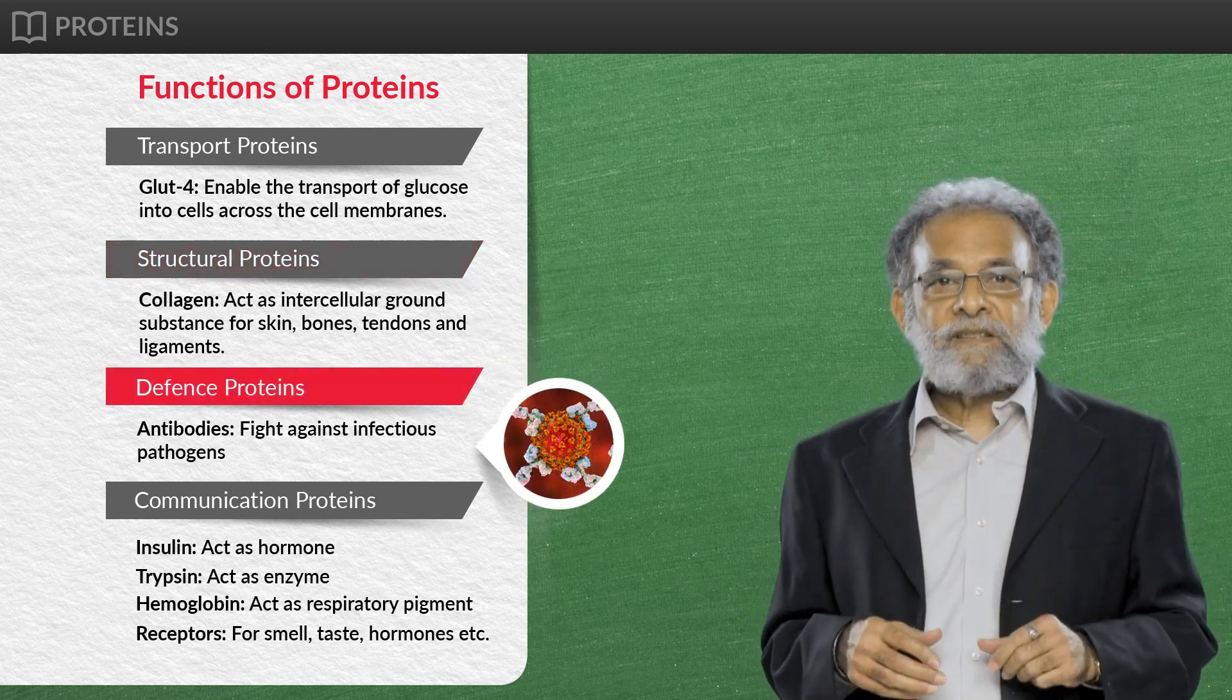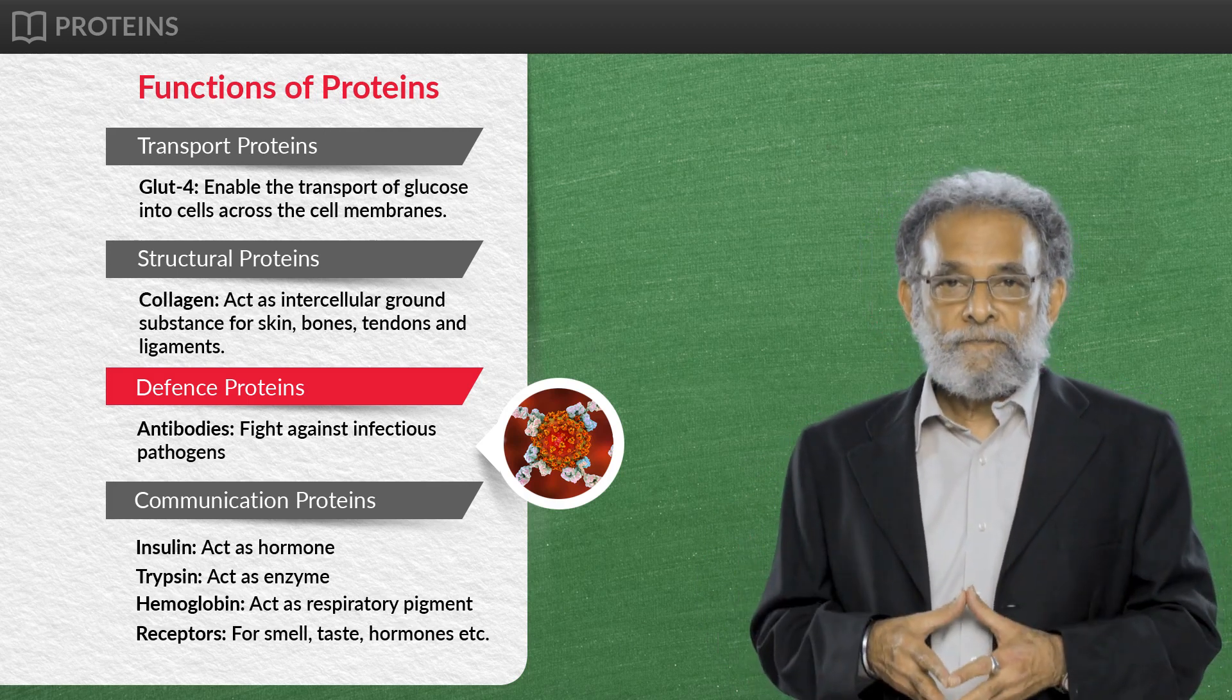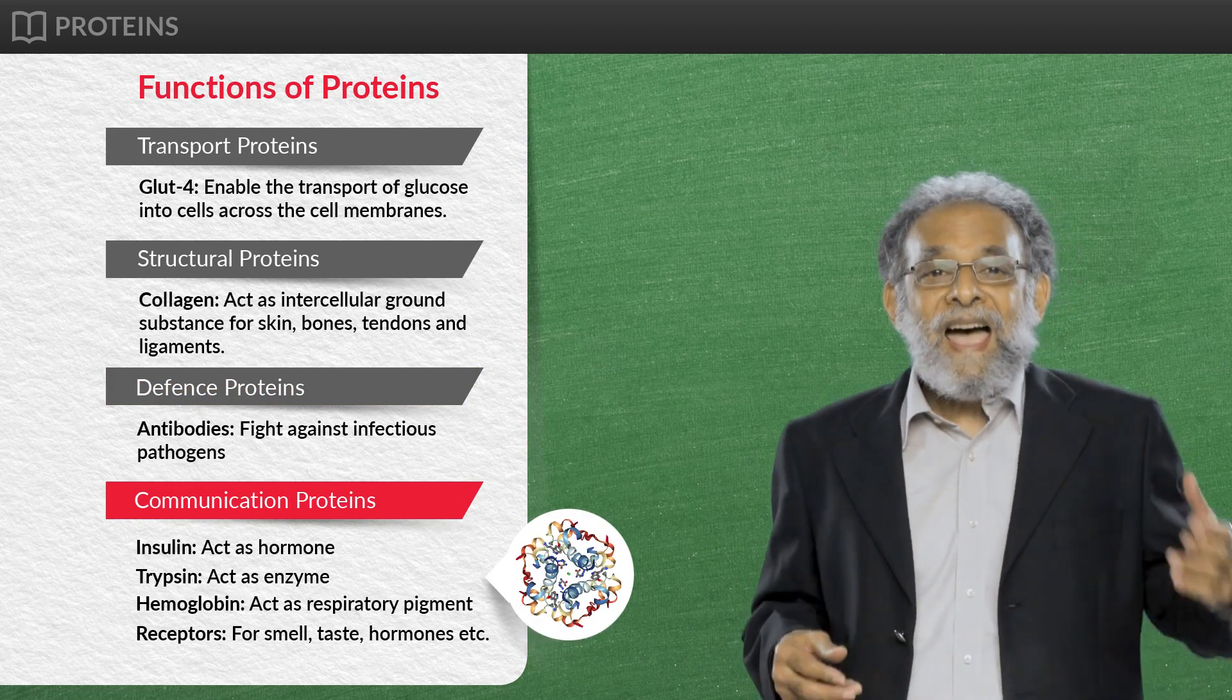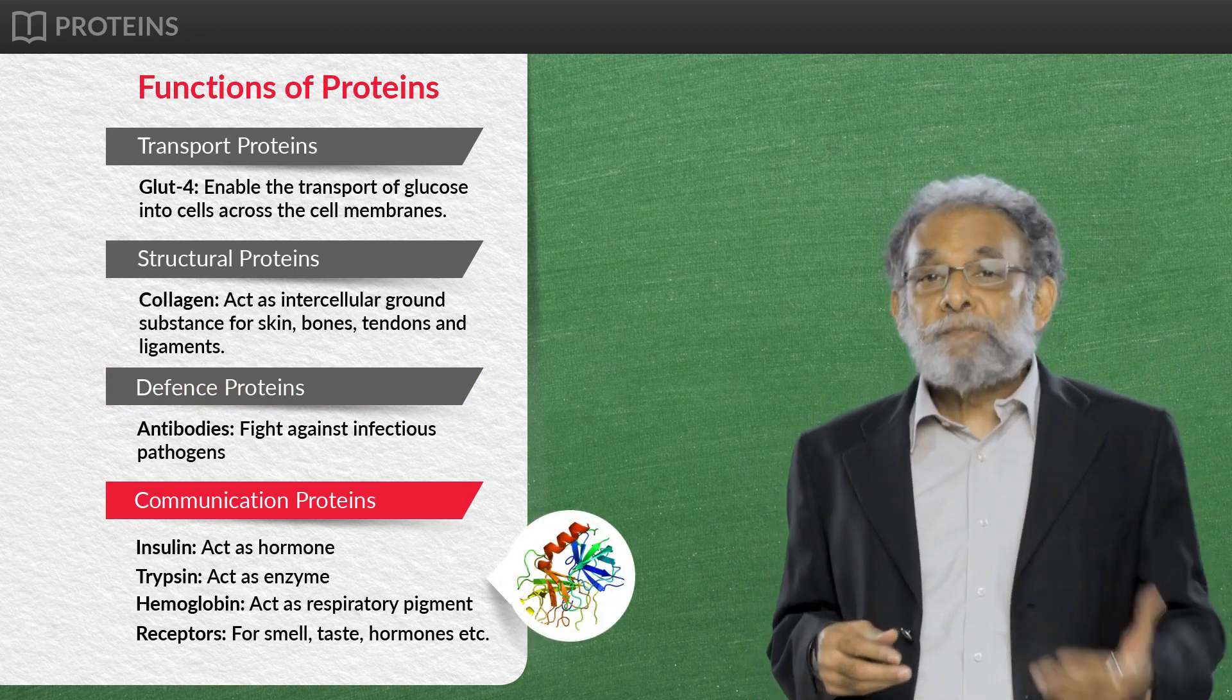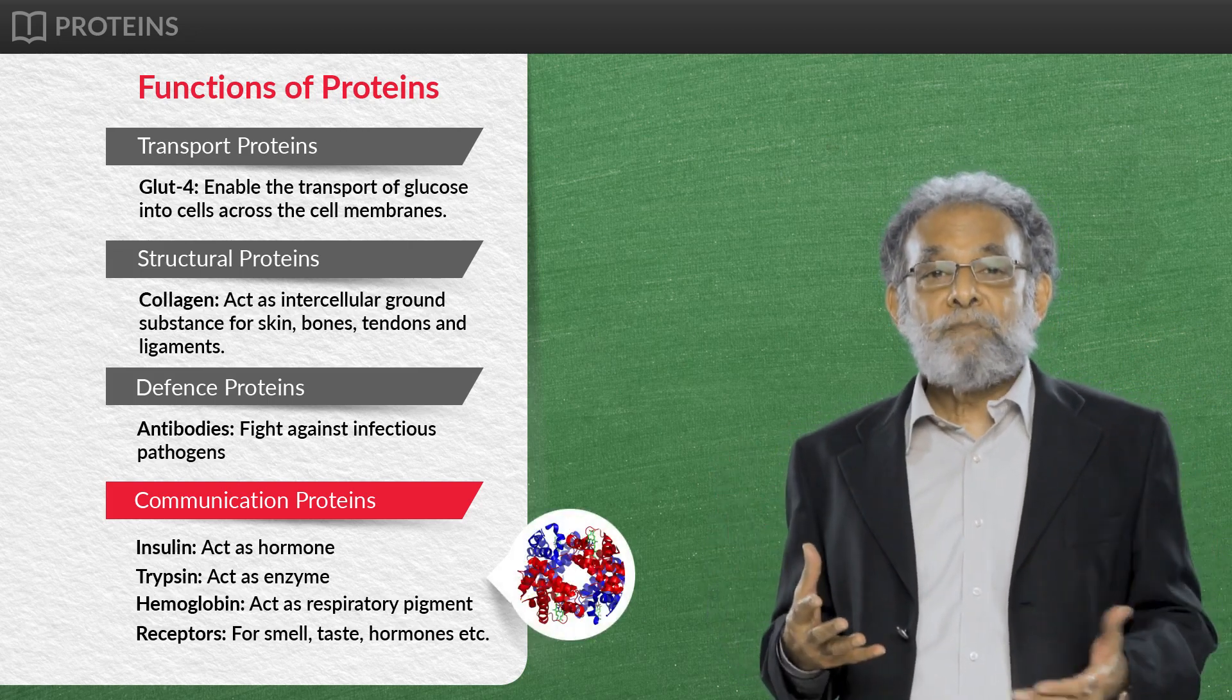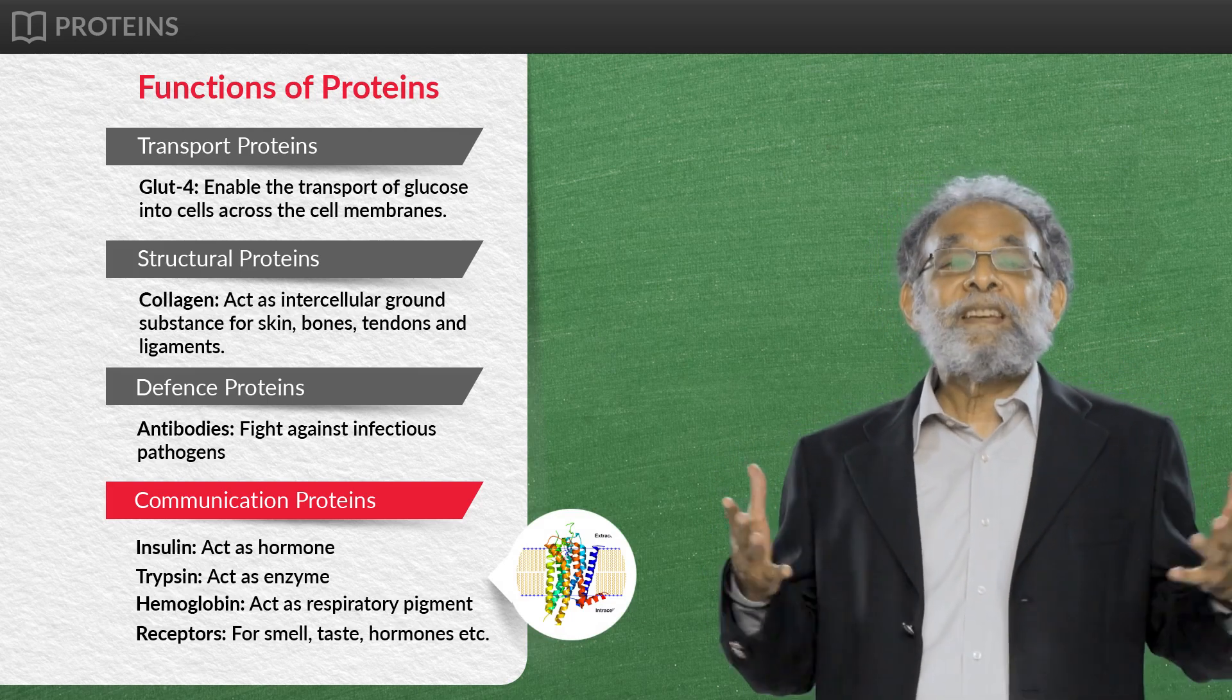Defense proteins, such as antibodies, fight against infectious pathogens. Communication proteins like insulin act as hormone, trypsin act as enzyme, hemoglobin act as respiratory pigment and receptors for smell, taste, hormones, etc.